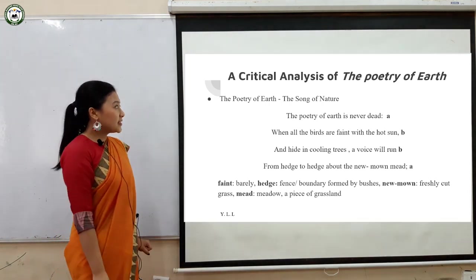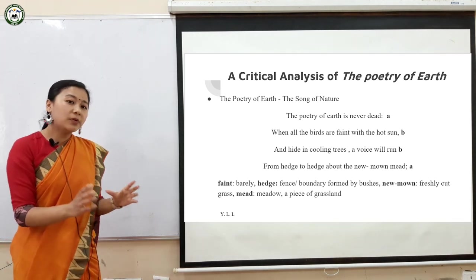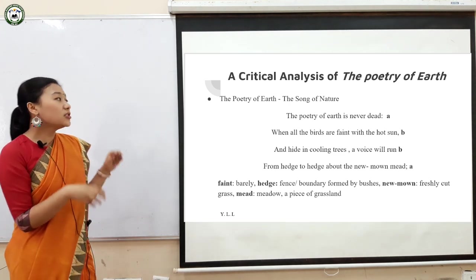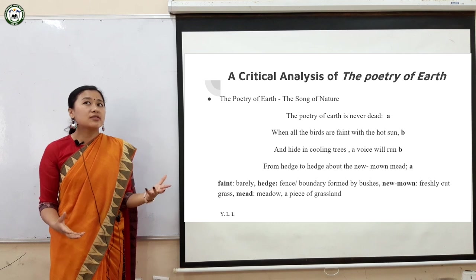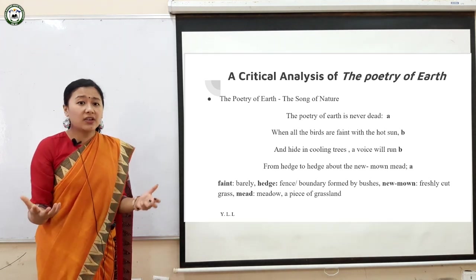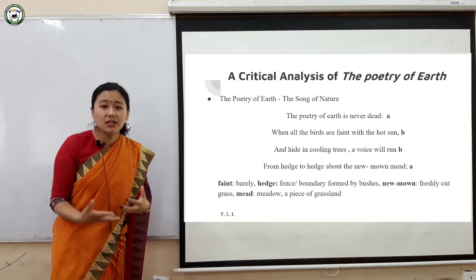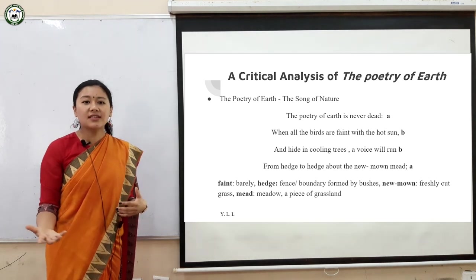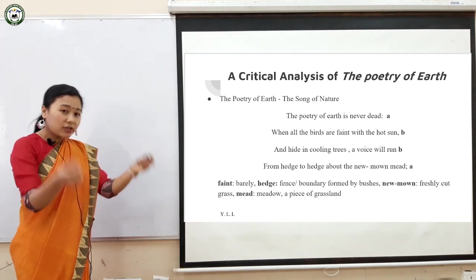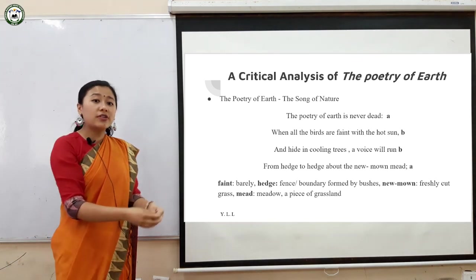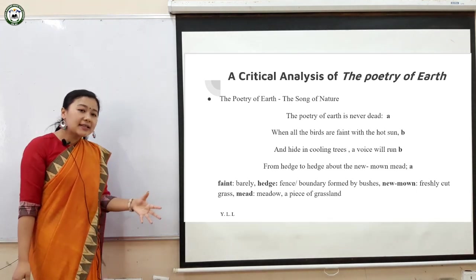Now moving on to the main topic — a critical analysis of the Poetry of Earth. What is the Poetry of Earth? In simple words, it means the song of nature. The poem tries to highlight the various sounds available in the natural world — the chirping of birds, the groaning of beasts, the buzzing of insects, or the sound of a waterfall. All these are natural sounds which nature provides us and helps us to communicate. In short, the language of nature is the sounds that creatures produce to communicate with us. The poet gives us the idea about the cycle of nature and the endless song produced by nature through insects and various other creatures.